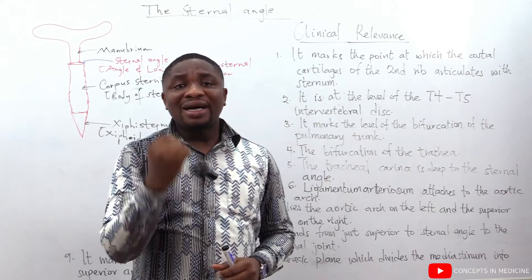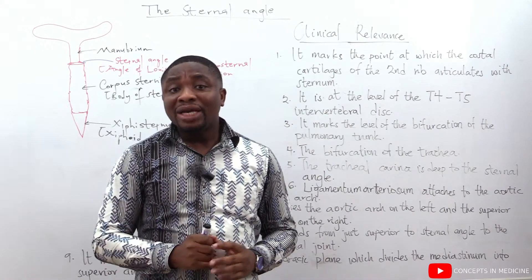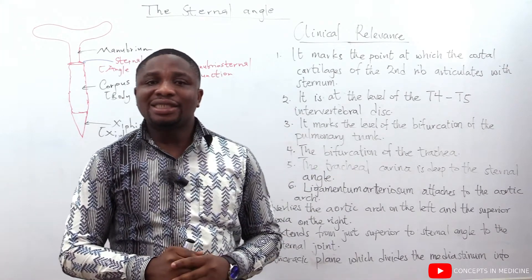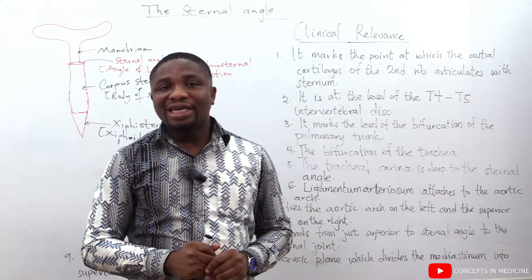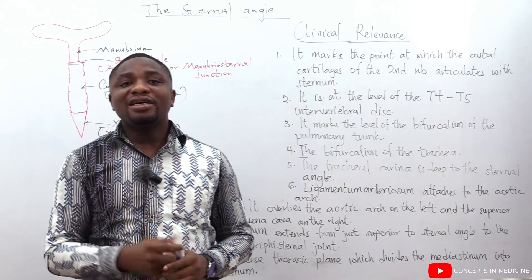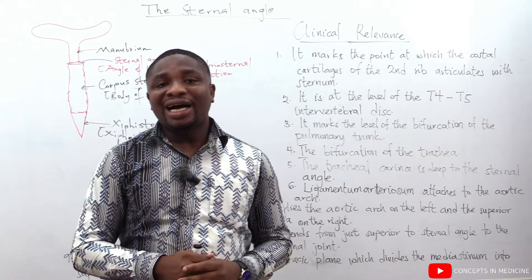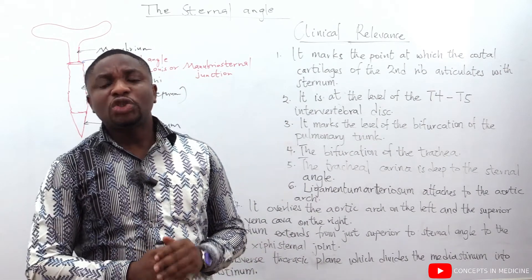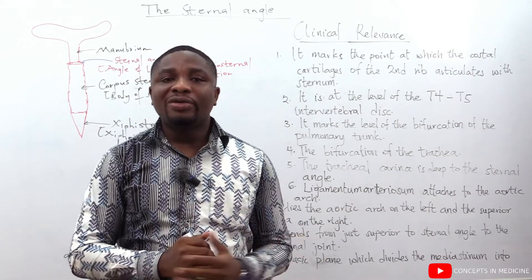The sternal angle marks the level at which the ligamentum arteriosum attaches to the aortic arch. The next clinical reference is that the sternal angle overlies the aortic arch to the left and the superior vena cava to the right.